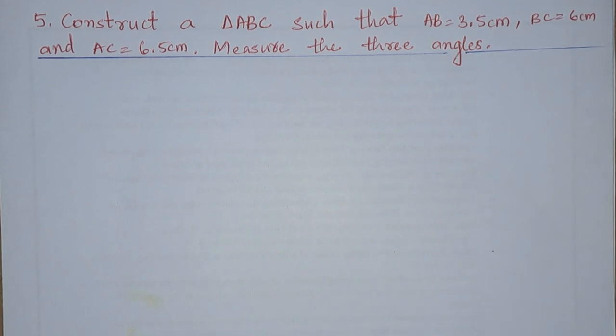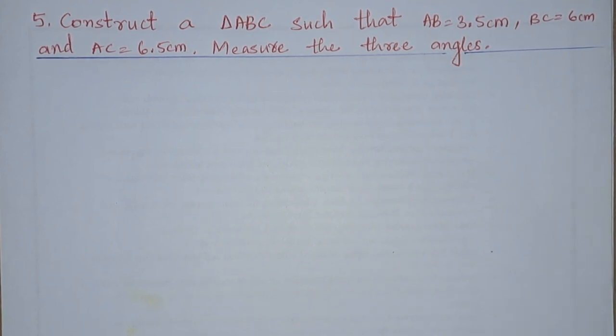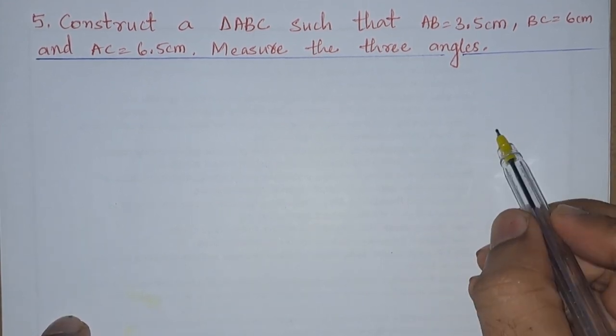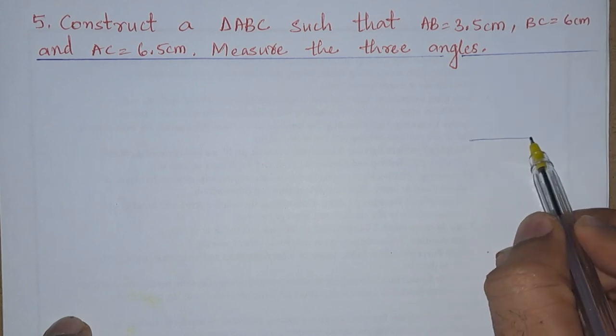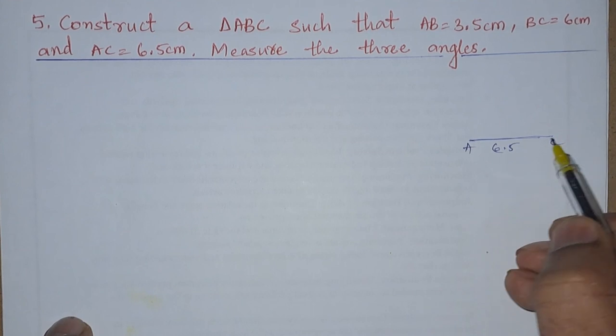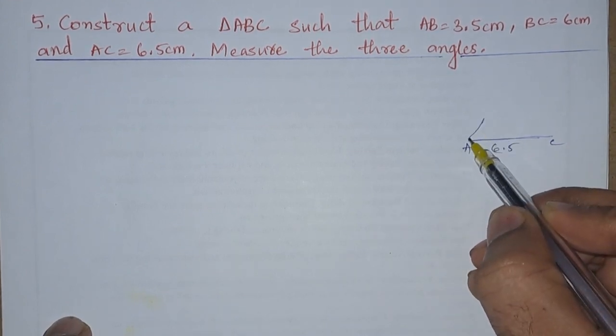They have given AB, BC, and AC, and we need to construct a triangle and measure the three angles. Here they have given AC is 6.5, so let us draw our rough diagram. AC, and A to B is 3.5 centimeters, then we are having BC which is 6 centimeters.